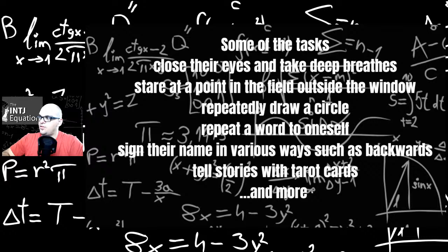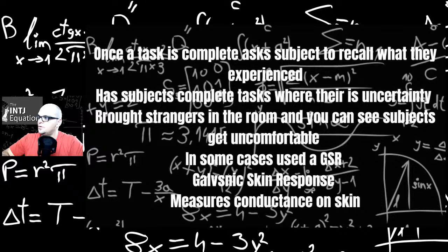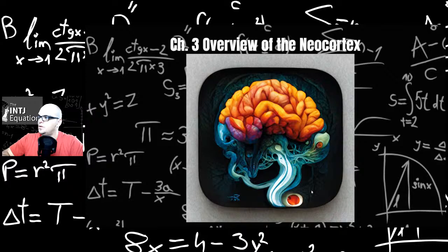Some of the tasks were to close their eyes and take deep breaths, stare at a point in the field outside the window, repeatedly draw a circle, repeat one word to themselves, sign their name in various ways such as backwards and with their off hand, tell stories with tarot cards, and much more. Once the task is complete, subjects are asked to recall what they experienced. Asked subjects to complete tasks with uncertainty. Brought strangers in rooms so you can see subjects get uncomfortable and you can see their brain waves change until they become more familiar with them. Some cases use a GSR, a galvanic skin response, which measures conductance in the skin.